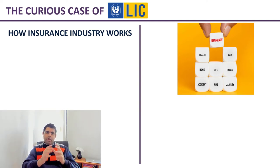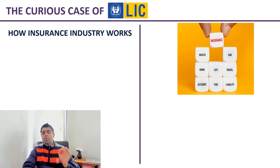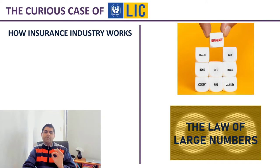So how does insurance actually work? You pick any kind of insurance — be it health insurance, life insurance, or auto insurance — they all work on the same principle. And that principle is called the law of large numbers.